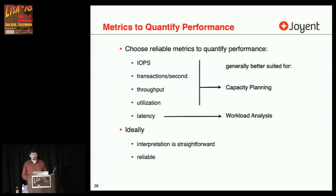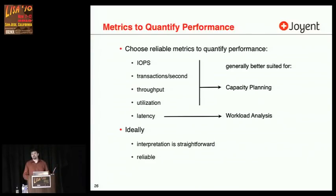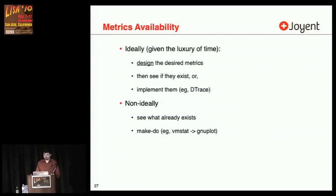These other metrics can help with workload analysis — I'm sure we've all solved problems by looking at IOPS or throughput — but these may be better thought of as secondary metrics after latency. Latency will help you quantify why an application is slow and what's making it slow, and then I can understand the nature of that by looking at those other metrics. For metrics availability, ideally we would design the desired metrics then see if they exist, or implement them — for example, using DTrace.